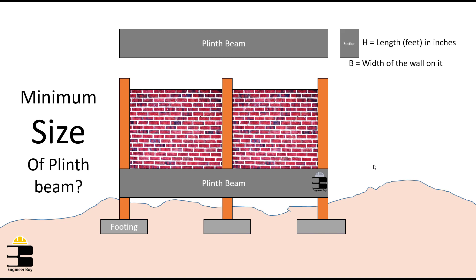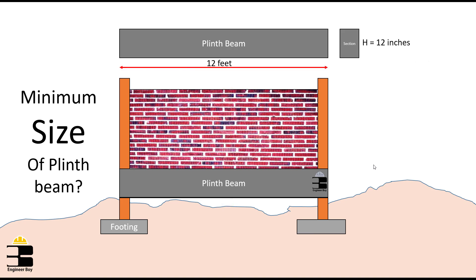Which means, if the beam's length is 12 feet, then its depth or height must be 12 inches. And if beam's length is 10 feet, then its height or depth must be 10 inches, and so on.